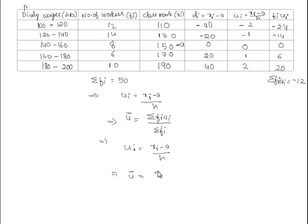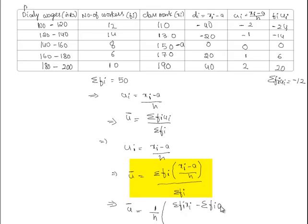u bar is equal to 1 by h times sigma fi xi minus sigma fi A by sigma fi. Here we shall write it again: u bar is equal to 1 by h times sigma fi xi by sigma fi minus A times sigma fi by sigma fi.